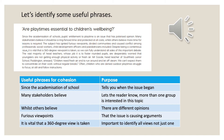'Many stakeholders believe it should be ring-fenced time and protected at all costs, while others believe more time for lessons is required.' Two fantastic useful phrases there: 'many stakeholders believe' — meaning lots of people have an opinion — and 'whilst others believe' on the other side. We can see two different lots of opinions, which is a really useful sentence structure. Carrying on: 'The subject has ignited furious viewpoints, divided communities and caused conflict among professionals, social workers, child development officers and paediatricians included.' It's listing the people affected. I've highlighted 'furious viewpoints' because people feel strongly about this. And then: 'It is vital that a 360-degree view is taken' — a really useful phrase telling the reader we need to look at all viewpoints, not just one.